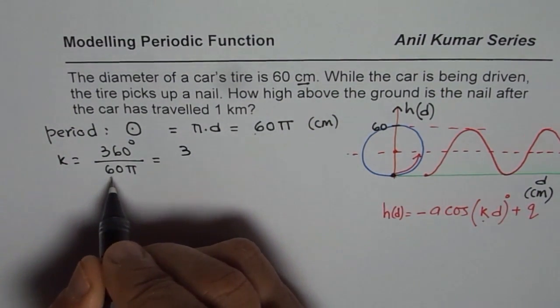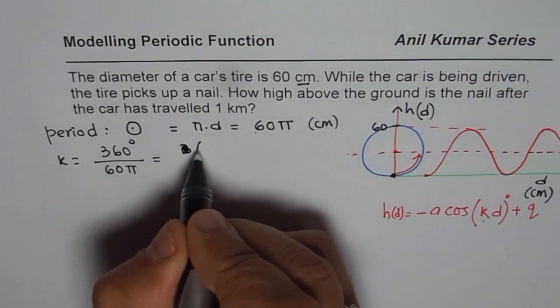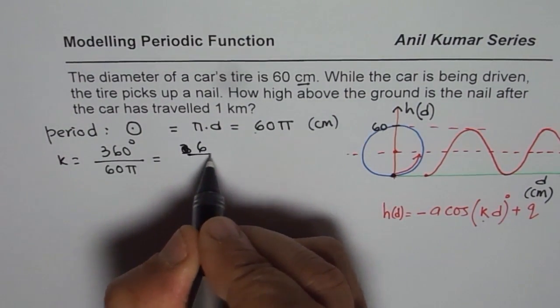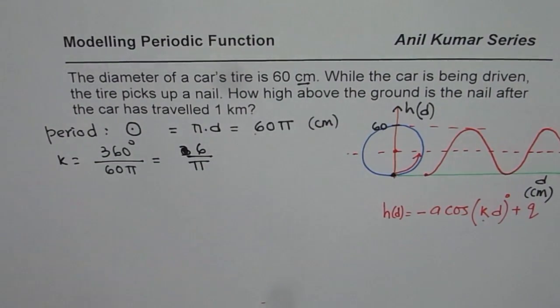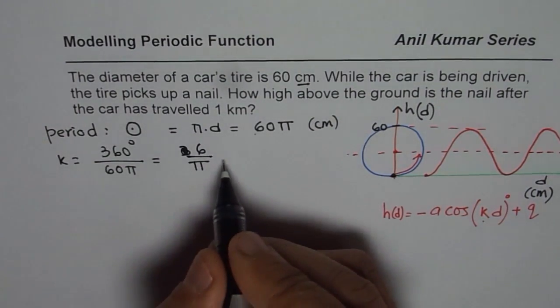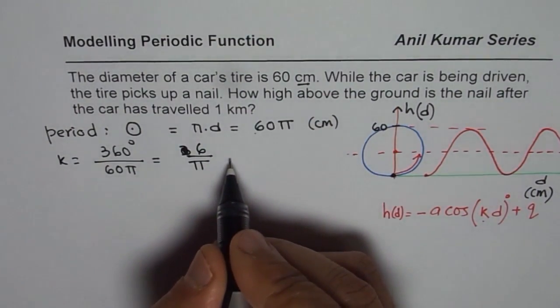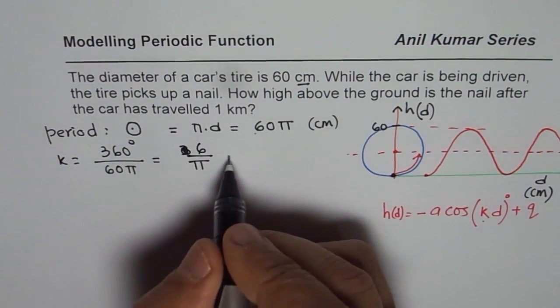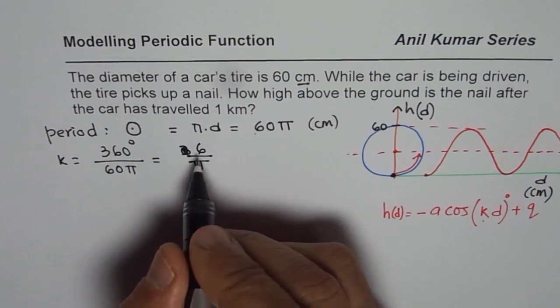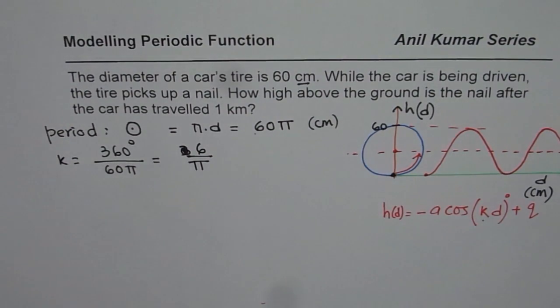I mean, 6, sorry. 6 divided by π. So 6 divided by π is the k value. You can always use your calculator, which I do not have at present, and then you find decimal value. So 6 divided by π is the value which we are looking for.